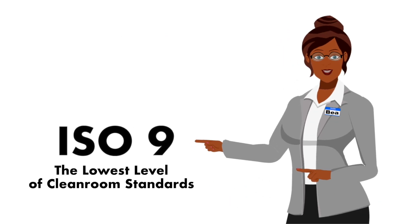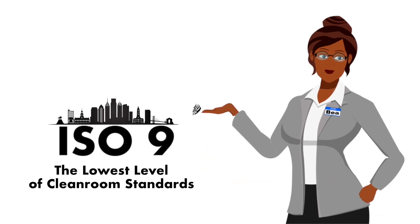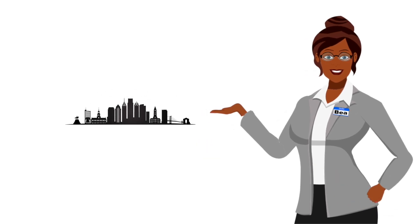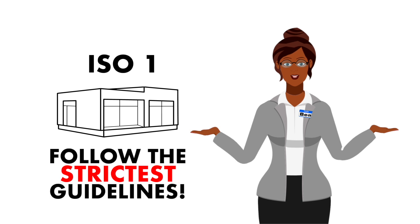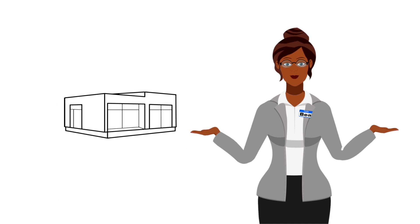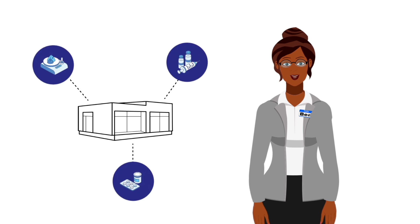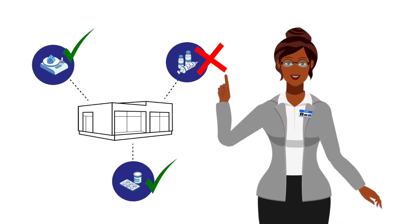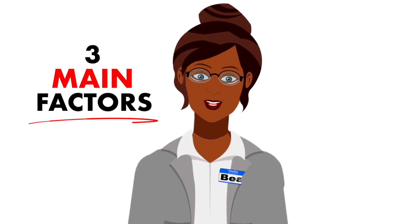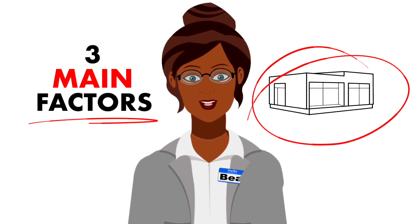ISO 9, the lowest level of clean room standards, equates to the ambient air in a typical city environment. ISO 1 clean rooms are rare and follow the strictest guidelines. The condition of your clean room can mean the difference between product success and failure. There are three main factors to consider for clean rooms of any classification.